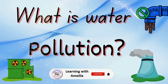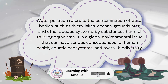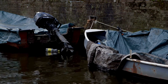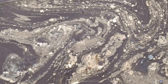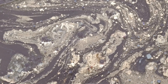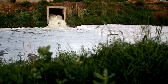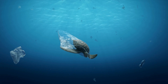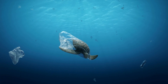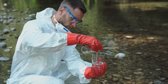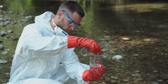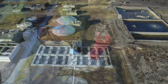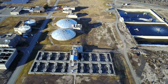What is water pollution? Water pollution refers to the contamination of water bodies such as rivers, lakes, oceans, groundwater, and other aquatic systems by substances harmful to living organisms. It is a global environmental issue that can have serious consequences for human health, aquatic ecosystems, and overall biodiversity.